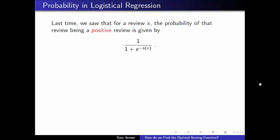So let's recall that when we have a review, we have a mechanism for scoring that review, which was given by this function S of X. And once we had that score, we translated the score into a probability by plugging that score into the sigmoid function. And that gave us this value right here for the probability that the review X is a positive review. So this is the probability of the review X being positive.